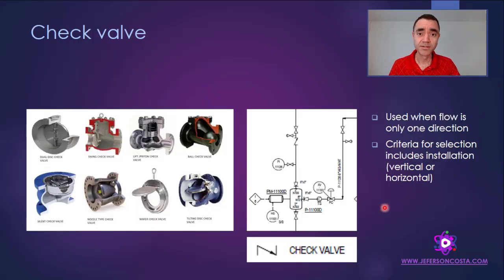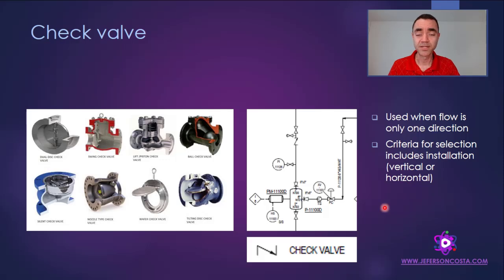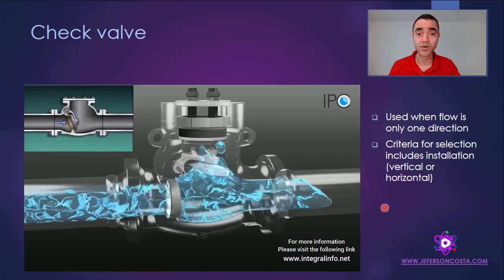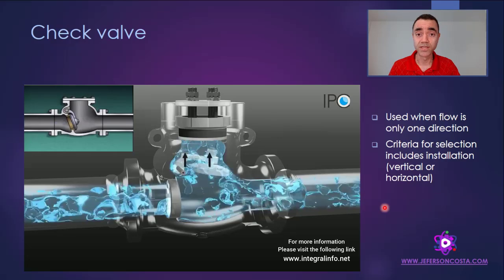Up to this point, based on the function classification, we have seen: the gate valve, mainly used for isolation; the globe valve, mainly used for regulation; and the ball valve and butterfly valve, which can be used for both isolation and regulation. Now let's look at the check valve, which is used for flow restriction.